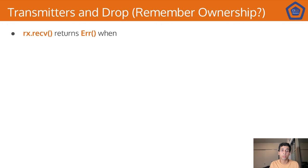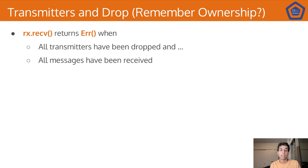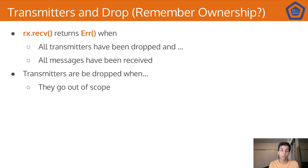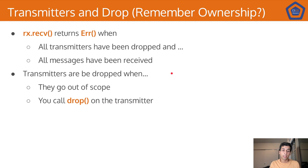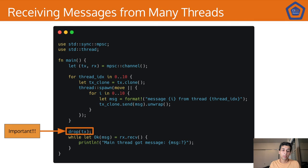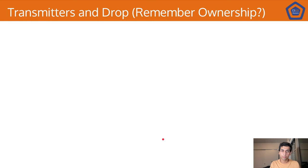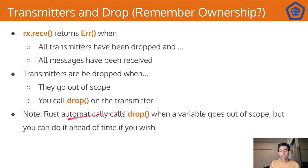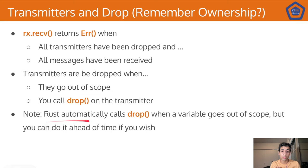A quick callback to ownership rules: recv() returns an error when all transmitters have been dropped and all messages have been received. Transmitters are dropped either when your thread finishes and the clone goes out of scope, or when you explicitly call drop(). So there are two ways for transmitters to go out of scope. It's critical to call drop on the original TX so your program behaves as expected. Rust will automatically call drop for you when variables go out of scope, but you can do it ahead of time. This is Rust's memory management in action — normally you don't need to worry about it, but in this case you need to pull back the curtain and do it yourself.